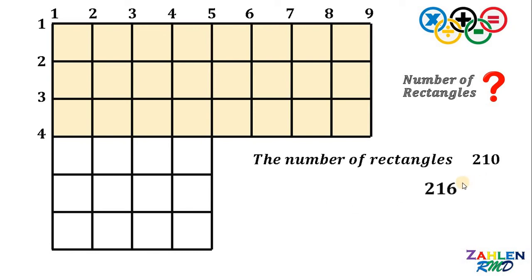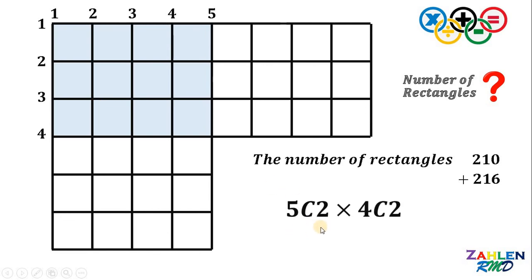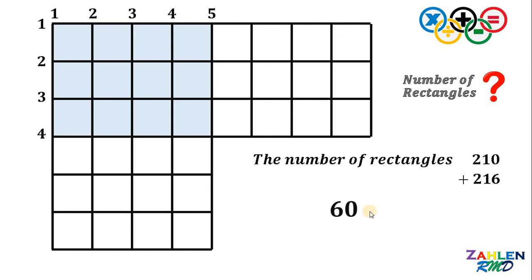We need to add the two results, then subtract the total rectangles in the blue overlapping region, because that area was counted twice. In the overlapping grid, there are five vertical lines and four horizontal lines. So the total equals 5 choose 2 times 4 choose 2, which is ten times six, equaling 60 rectangles. We subtract this from our running total.